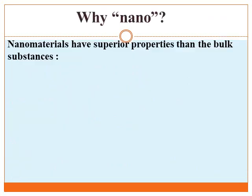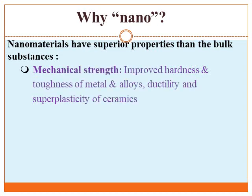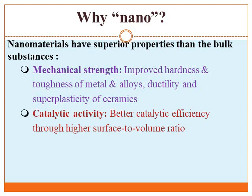Nanomaterials have superior properties compared to bulk materials. These include mechanical strength — improved hardness, toughness of metals and alloys, ductility, and super plasticity of ceramics. When a material is reduced to nanoscale, mechanical properties are improved. Nanomaterials also possess better catalytic efficiency through a higher surface-to-volume ratio. The surface area is very large compared to volume, with more active centers, leading to higher catalytic activity.